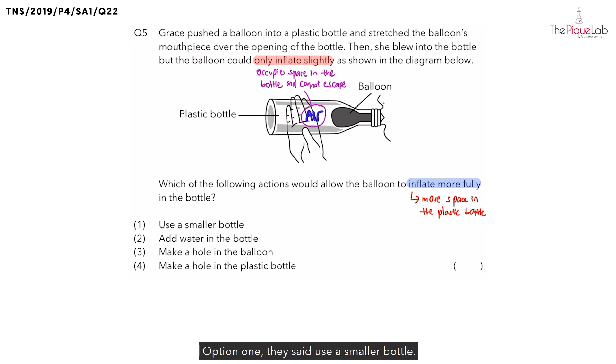So let's take a look at the options. Option one, they said use a smaller bottle. Now think about it. When you have a smaller bottle, is there going to be more space or less space? There's going to be less space in the bottle. So we can write this down. There is less space for the balloon to inflate. So because of that, is option one possible? No. We can cross out option one.